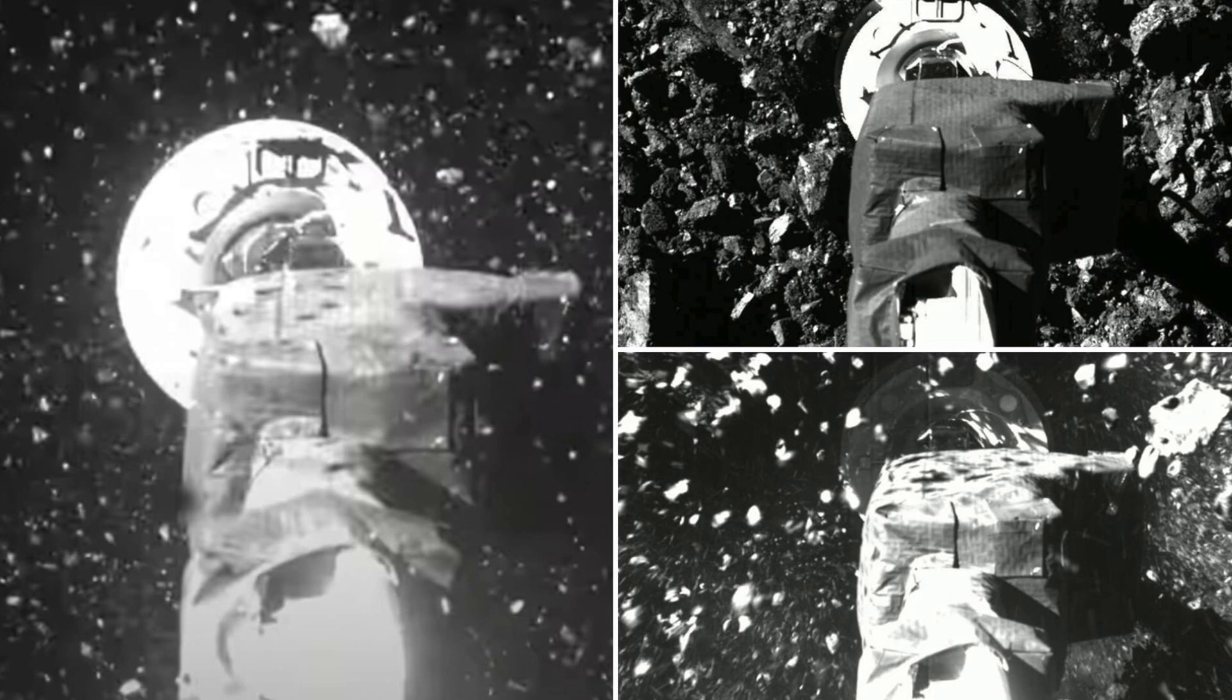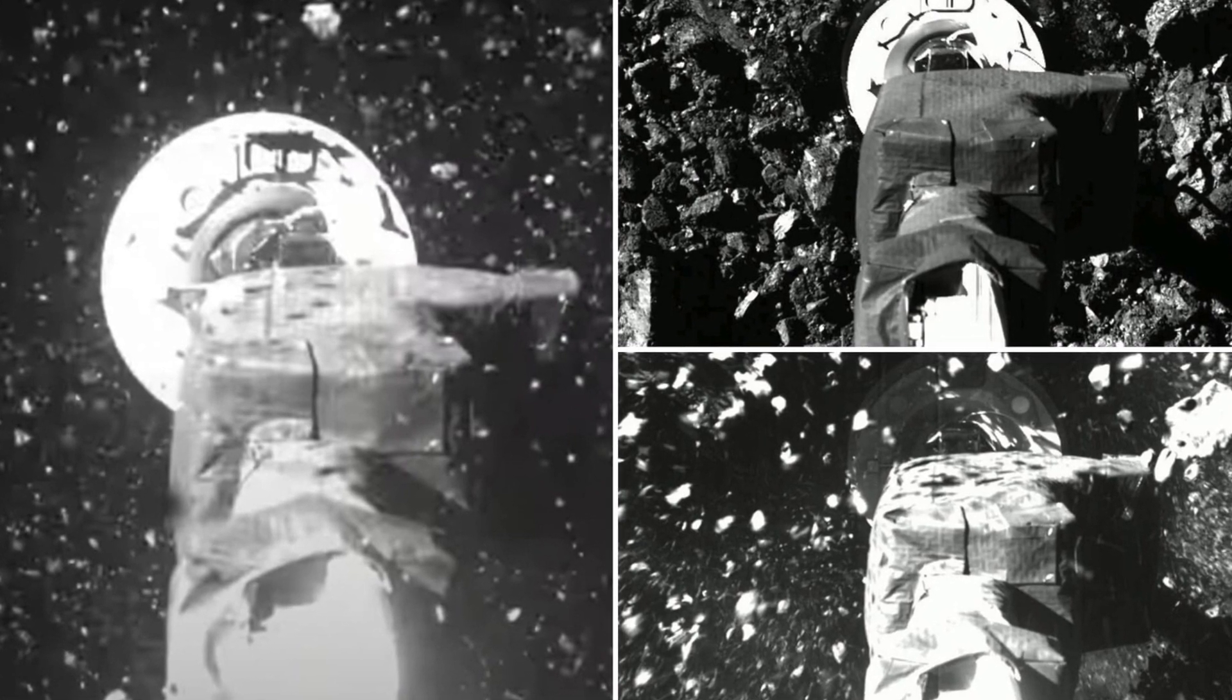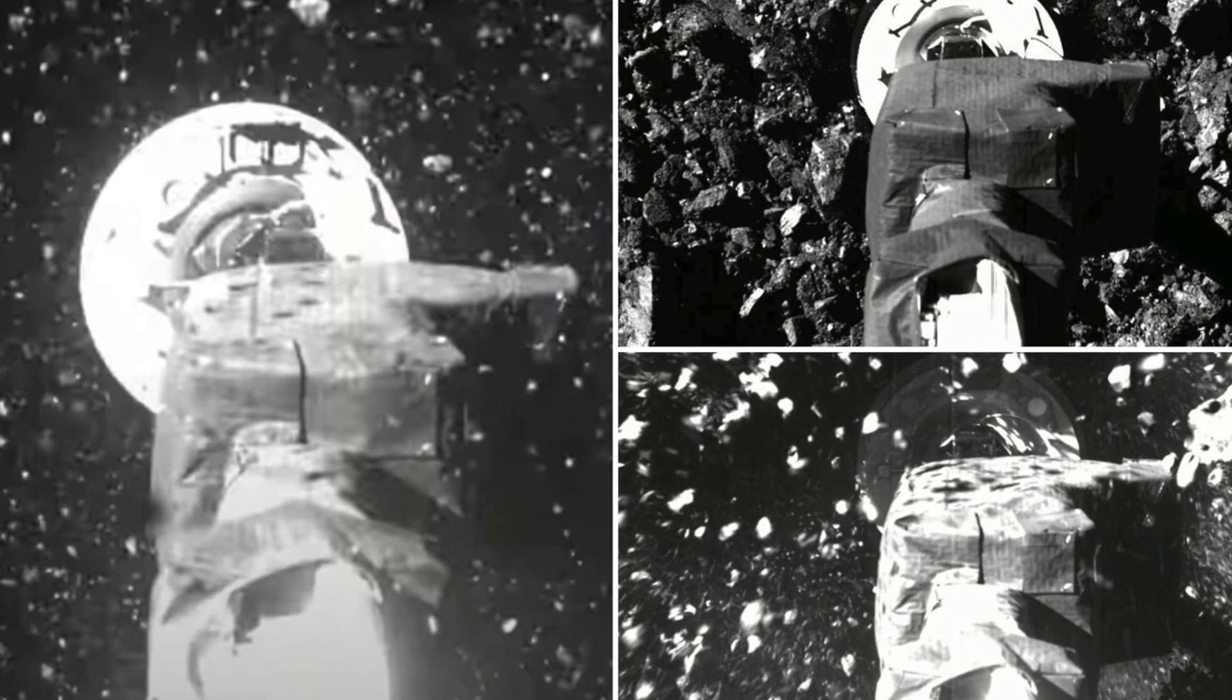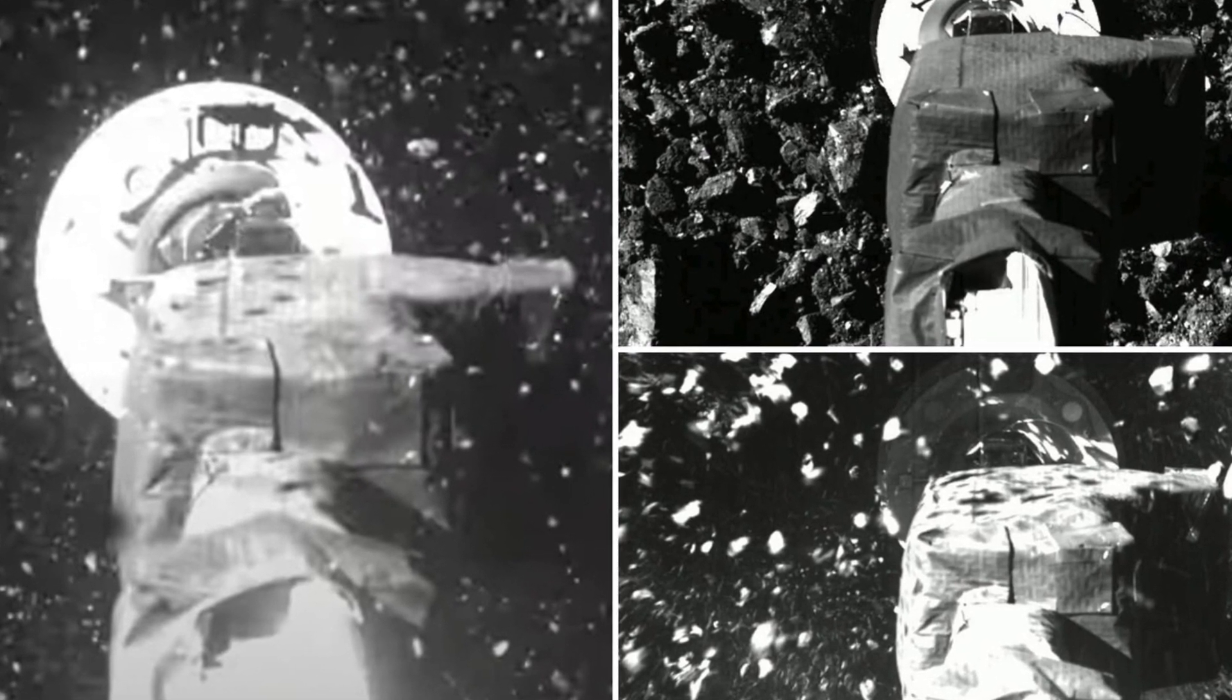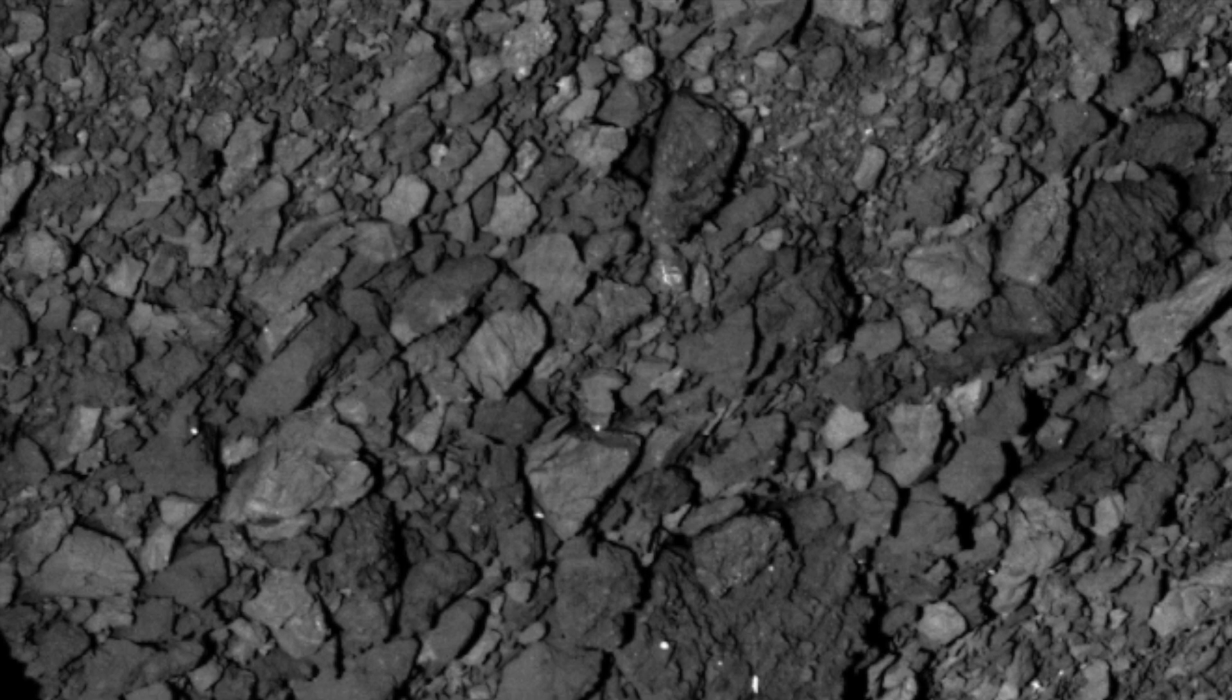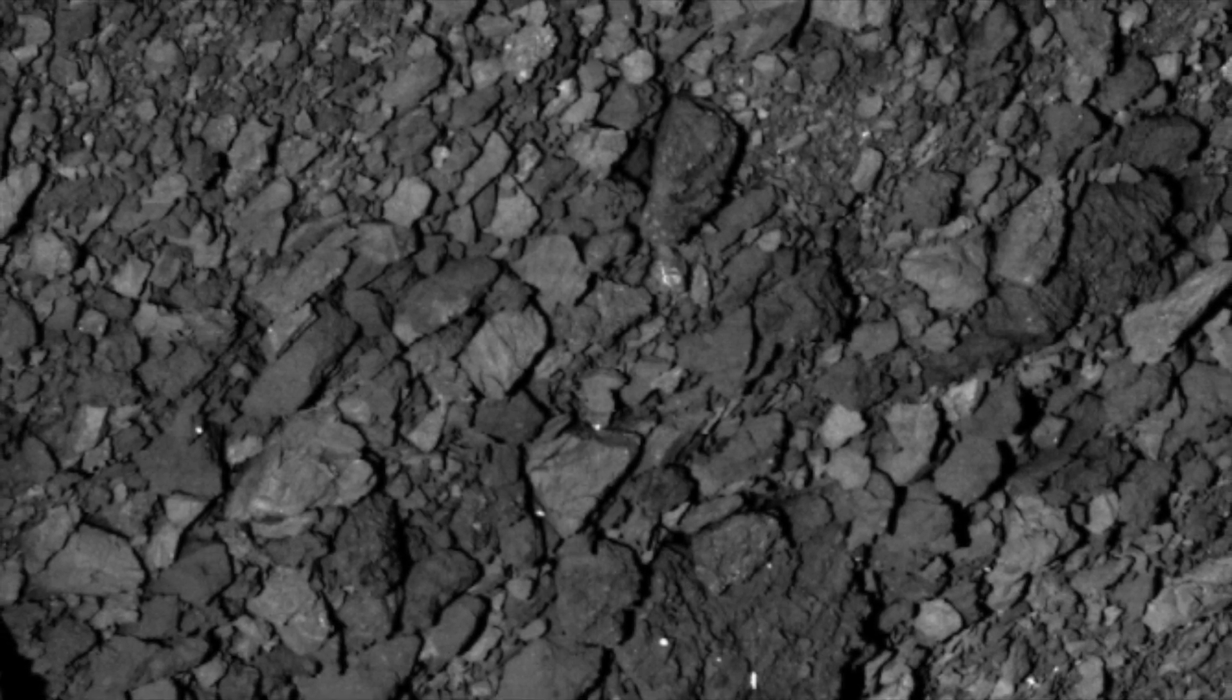Bennu is an ancient asteroid that is currently on course more than 700 million miles away from Earth. The asteroid is in good condition, and it gives scientists the chance to see what the solar system was like when it was first formed billions of years in the past. The asteroid could also point towards celestial impacts that may have dropped off materials on Earth.